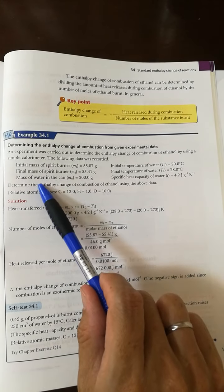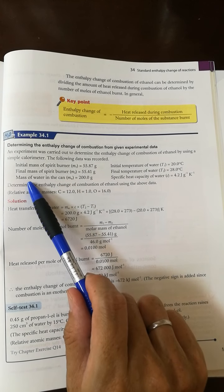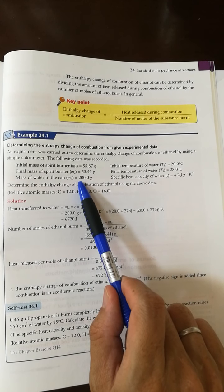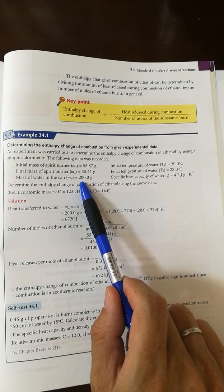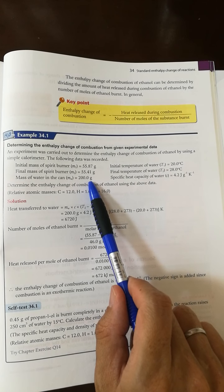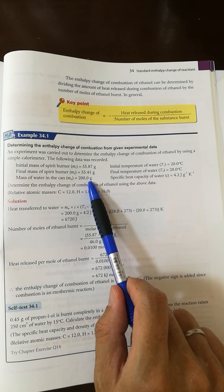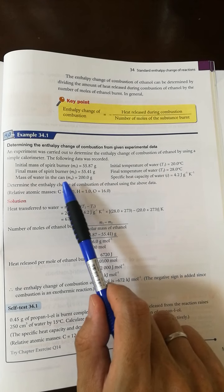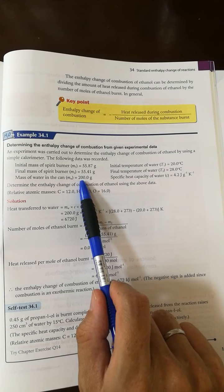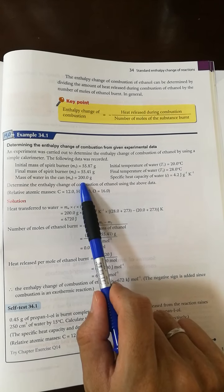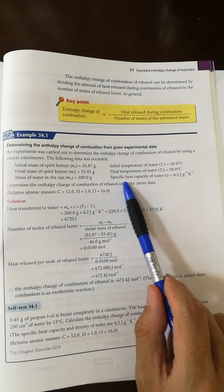And then the container, the can, contains the water. It has a mass of 200.2 grams, and this is the mass of the water, M, in this case.